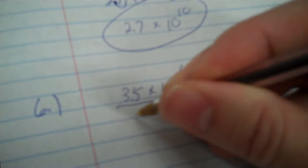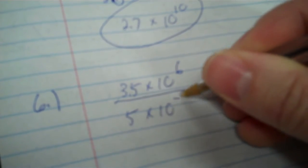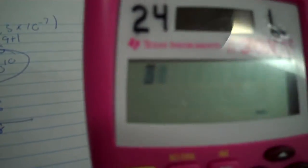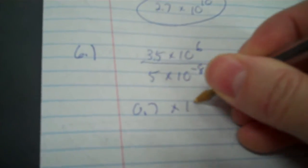Okay, number 6. We have 3.5 times 10 to the sixth, divided by 5, times 10 to the negative eighth. So, here we divide. 3.5 divided by 5, and then 10 to the sixth, divided by 10 to the negative eighth. Now, instead of multiplying, we're going to divide. So, 3.5 divided by 5 is 0.7 times 10. Now, you need to cross out the bottom, and you subtract from the top. So, 6 minus negative 8 is 14.